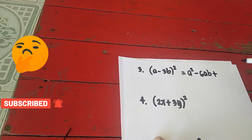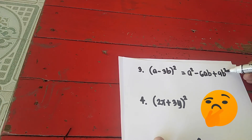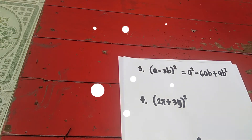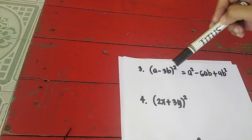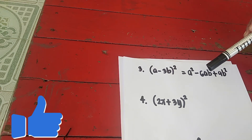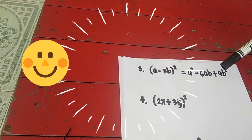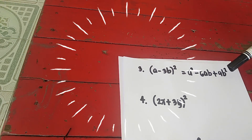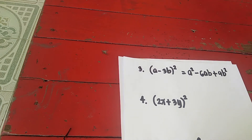The last term becomes 9b squared. So: square the first term to get a squared, multiply a times 3b to get 3ab, times 2 gives 6ab, and the sign is minus. The last term is always positive — square 3b: 3b times 3b is 9b squared. That is how to square a binomial.